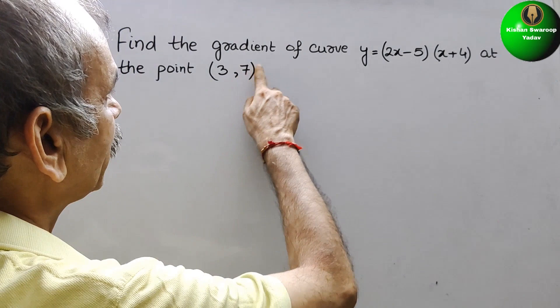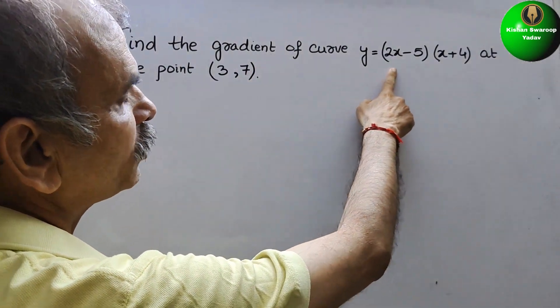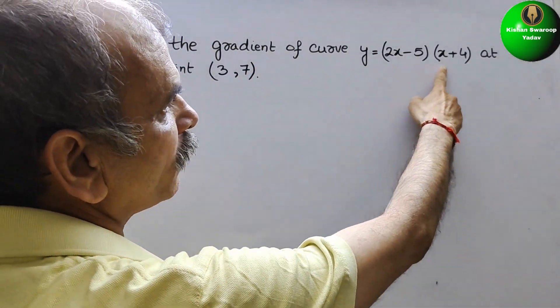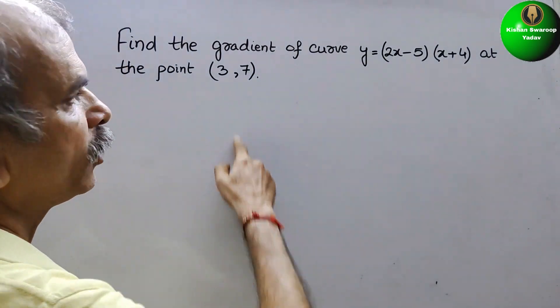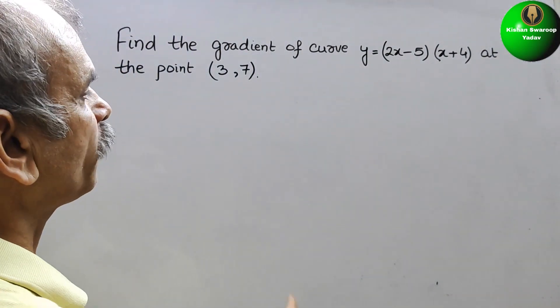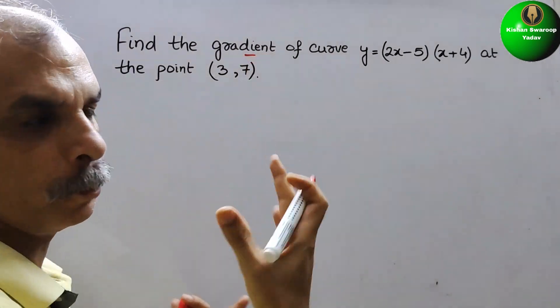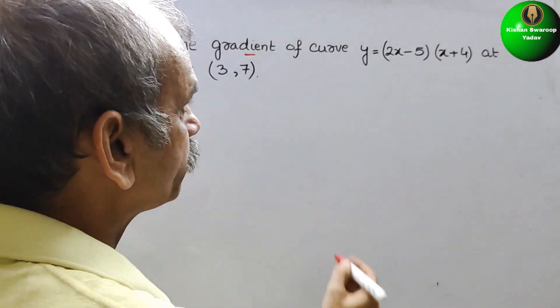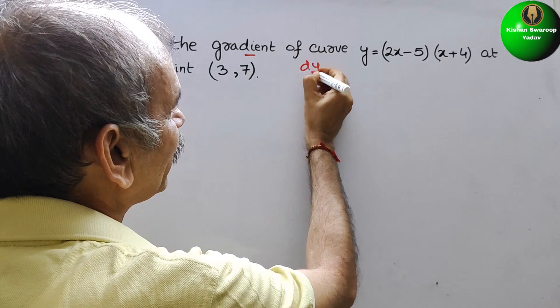Your question is find the gradient of the curve y = (2x-5)(x+4) at the point (3, y). They have told that we have to find out the gradient that means slope. So that is nothing but dy by dx.